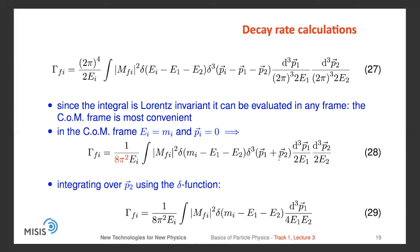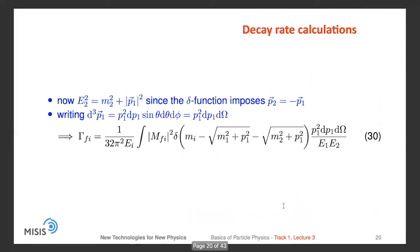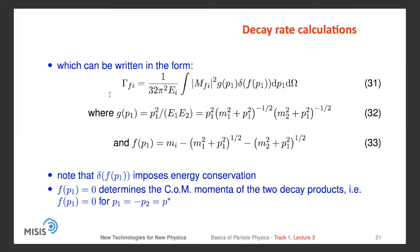We can integrate out p₂ using the delta function and get an expression where we only need to compute the integral over p₁. We can also write E₂² in terms of p₁ since the delta function imposes p₂ = −p₁. Then we expand d³p₁ in spherical coordinates and get the integral needed to compute Γ. We can write it in another form with an integral over a phase element, a function g = p₁²/(E₁·E₂), and a delta function of f, where f encodes energy conservation: δ(f) explicitly enforces energy conservation in our decay.